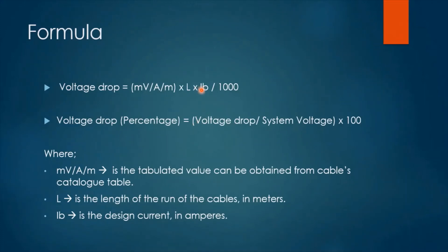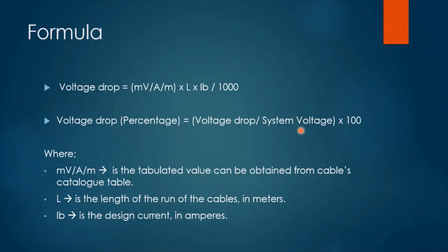Now let's introduce the formula for calculating voltage drop. Voltage drop equals millivolt per ampere per meter (mV/A/m) multiplied by the length, multiplied by the current, divided by 1000. To convert this into a percentage, we divide the obtained voltage drop by the given system voltage and multiply by 100. Here, mV/A/m is the tabulated value obtained from a cables catalog table, L is the length of the cable in meters, and IB indicates the design current in amperes.